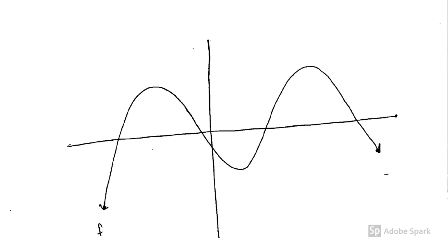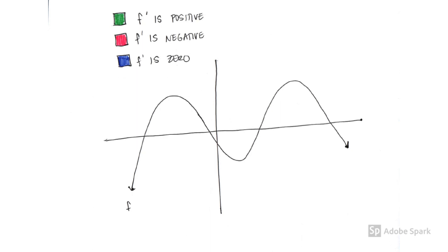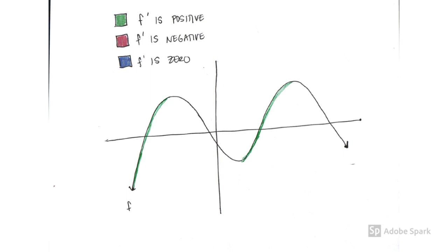When I look at the graph, whenever the function is increasing, that means the tangent line would have a positive slope. And when the function is decreasing, the tangent line would have a negative slope. So our job is: given the graph of the function, let's figure out where the derivative is positive, negative, and zero.